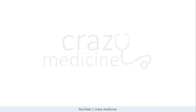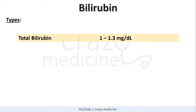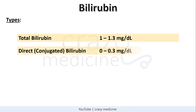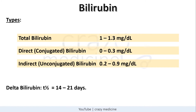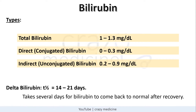Coming to normal values of bilirubin: total bilirubin is around 1 to 1.3 mg/dL. Conjugated (direct) bilirubin is up to 0.3 mg/dL, and indirect (unconjugated) bilirubin is around 0.2 to 0.9 mg/dL. One must know about a variant called delta bilirubin, which has a half-life of about 14 to 21 days compared to normal bilirubin at 4 to 5 hours. So if a patient has the delta variant, it takes several days for bilirubin to normalize after recovery, which can be clinically significant.